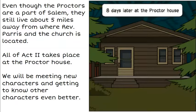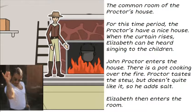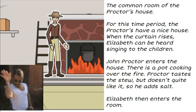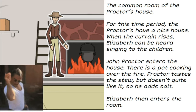Act Two takes place eight days later at the Proctor house. After all of the girls go off and start accusing community members, we see that 11 people have been accused by the time Act One ends. Even though the Proctors live in the town of Salem, they are five miles away from where everything took place during Act One. The scene opens in the common room of the Proctor house — for this time period, they have a pretty nice house.